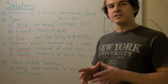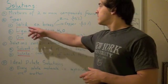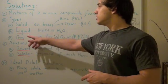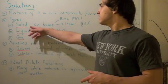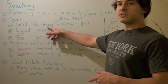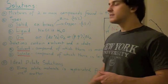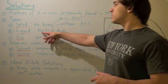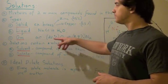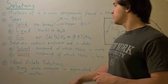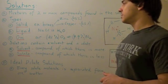Now since there are three states possible, three types of solutions exist: solid solutions, liquid solutions, and gas solutions. An example of a solid solution is brass — a metal composed of zinc and copper. An example of a liquid solution is sodium chloride, or salt, found in water. An example of a gas solution is air, which is composed of nitrogen and oxygen.